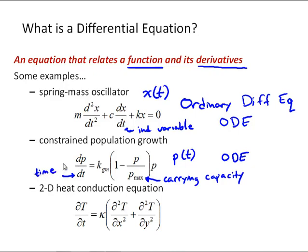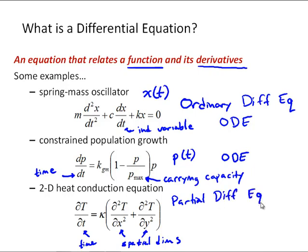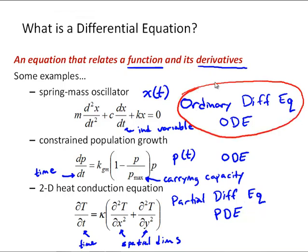A single independent variable makes it an ordinary differential equation. In contrast, the 2D heat conduction equation looks at the behavior of temperature in time and space. So we have partial derivatives with respect to time, and partial derivatives with respect to x and y — two spatial dimensions. And so this is a partial differential equation, or PDE. In Engineering 240, we're going to focus on ordinary differential equations, but the techniques that we use extend to partial differential equations.